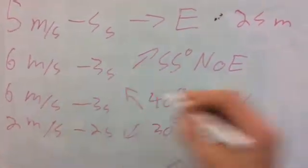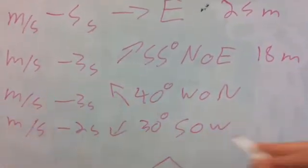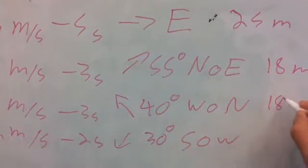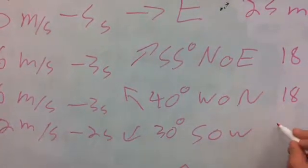Again, 6 times 3 would be 18 meters. Another 6 times 3 would be 18 meters. And 2 times 2 would be 4 meters.